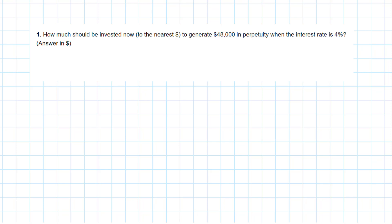Let us start with this question, which is testing your knowledge of investment appraisal. We've got a fill-in-the-blank style question. How much should be invested now, to the nearest dollar, to generate $48,000 per year in perpetuity — that's into infinity — when the interest rate is 4%?